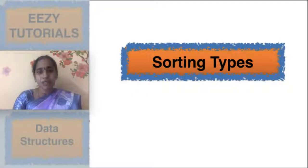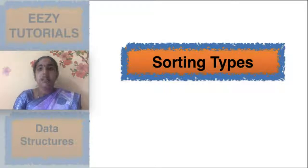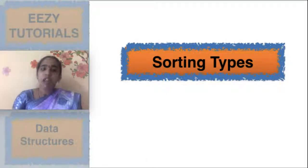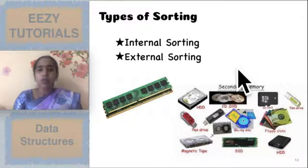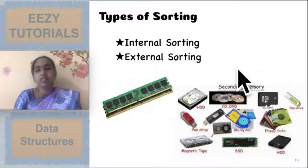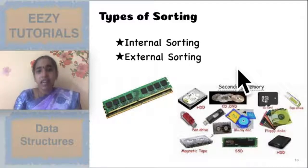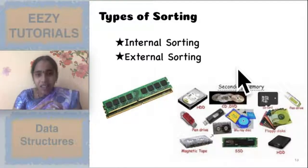Hi everybody, welcome to Easy Tutorials. In the last lecture we saw an introduction about sorting algorithms. Here we are going to see what are the types of sorting. Broadly you can classify sorting into two types: internal sorting and external sorting. We use data for performing sorting — we arrange the data in a certain order, either ascending order, descending order, or lexicographical order.